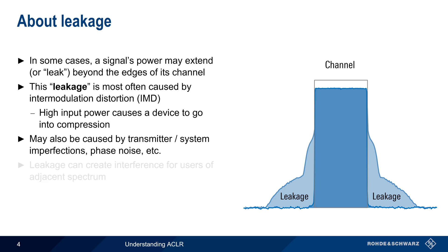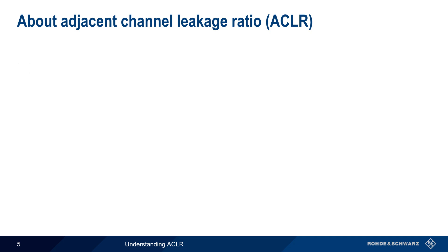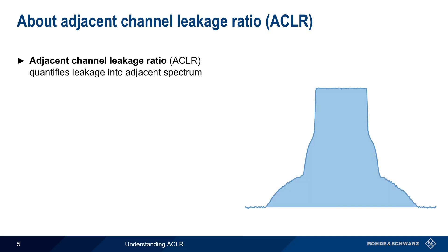Leakage is always undesirable because it can create interference for users of adjacent spectrum channels. Therefore, it's important to be able to quantify or measure this leakage. Adjacent channel leakage ratio, or ACLR, is the standard way of quantifying this leakage.